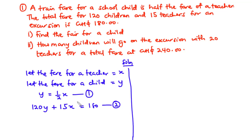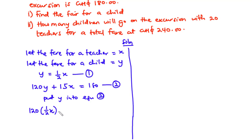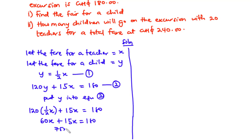Now let's solve these two equations simultaneously. We are going to substitute y into equation two. Putting y = x/2 into equation two, we have 120 times (x/2) plus 15x equals 180. Half of 120 is 60, so we have 60x plus 15x equals 180, which gives 75x equals 180. Dividing through by 75, we get x equals 2.4.